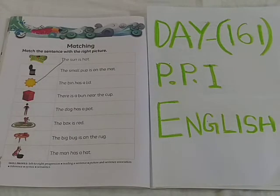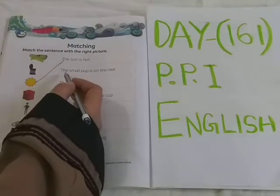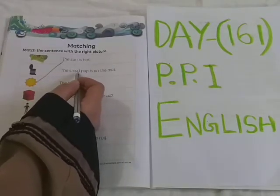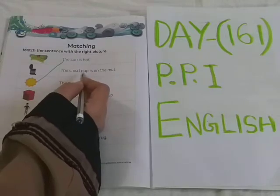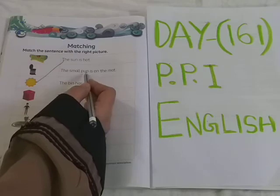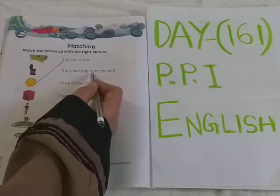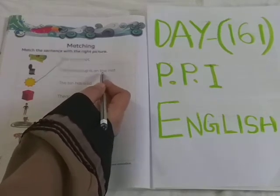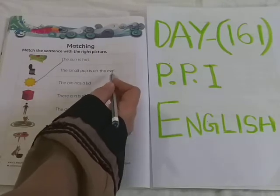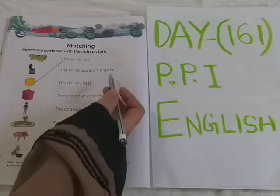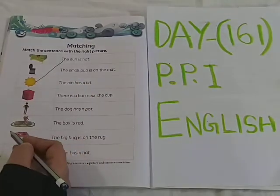Like this we have to do. Now see the next sentence. T-H-E — The. S-M-A-L-L — Small. P-U-P — Pup. The small pup. I-S — Is. O-N — On. T-H-E — The. M-A-T — Mat. The small pup is on the mat. Where is the small pup on the mat?